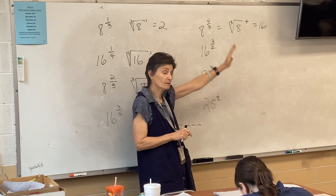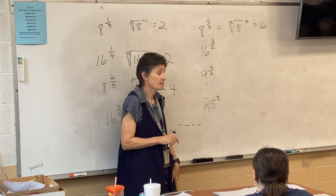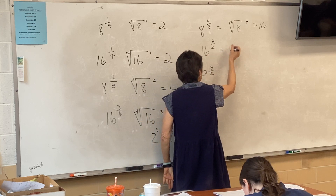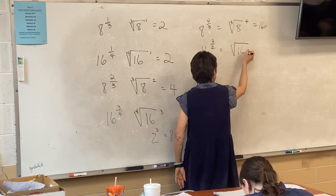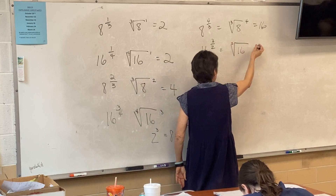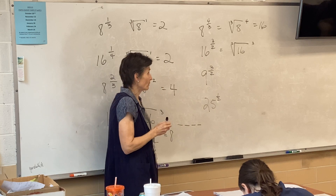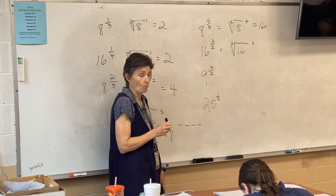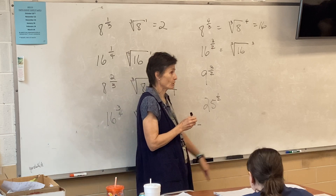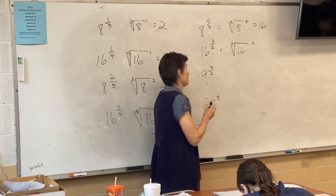This is no calculator, people. You need to be able to figure these out. What's this one? 16 goes under the radical — this one's going to be a square root cubed. What's the square root of 16? Four. And four cubed — four times four times four — is 64.